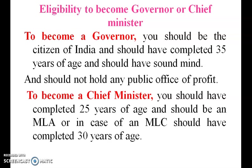Eligibility to become Governor or Chief Minister: to become a Governor, you should be a citizen of India, should have completed 35 years of age, should have sound knowledge, and should not hold any public office of profit. To become a Chief Minister, you have to be 25 years of age and should be an MLA, or in the case of an MLC, should have completed 30 years of age.